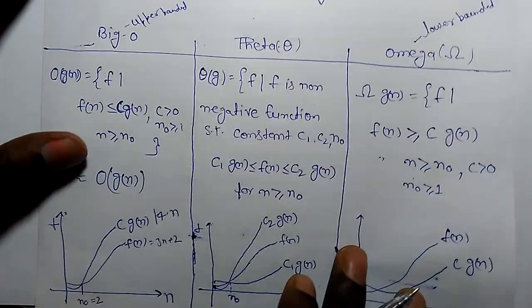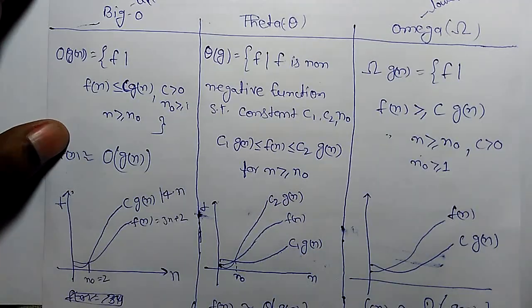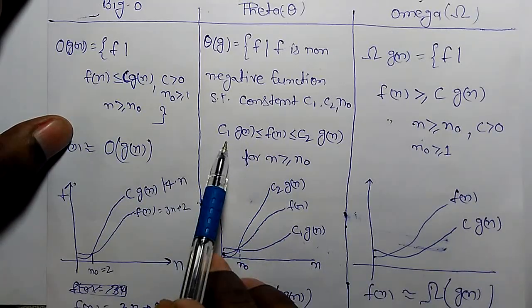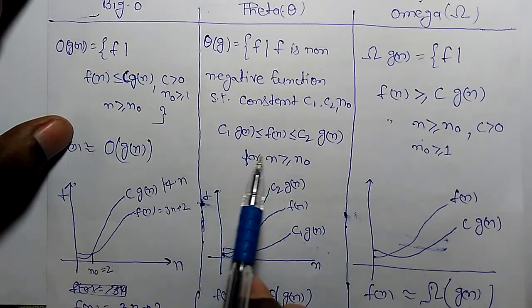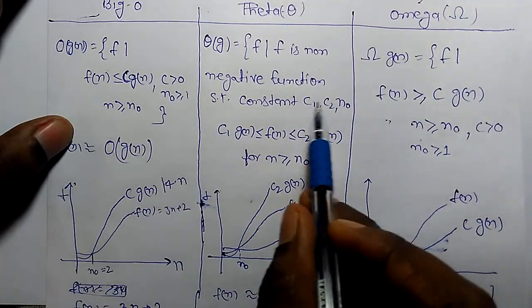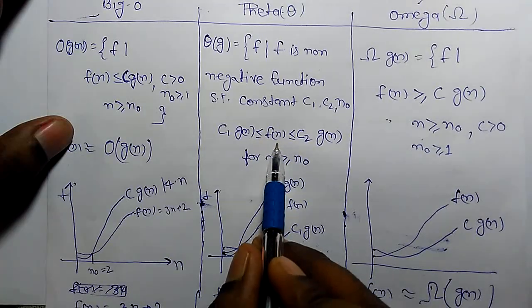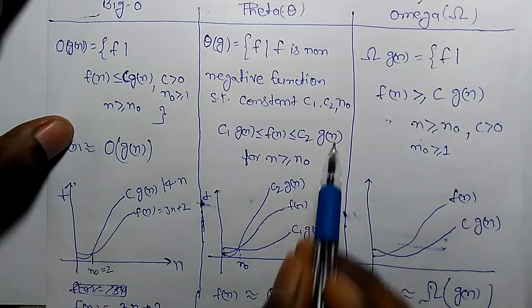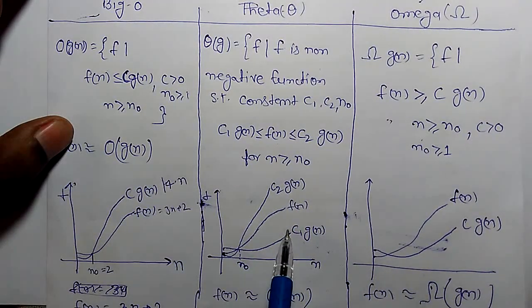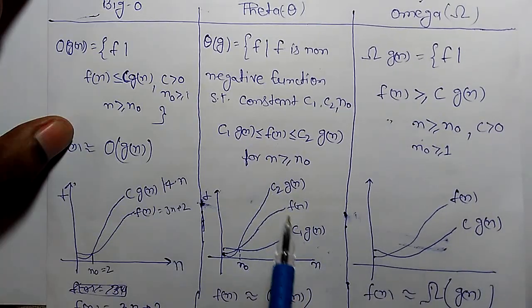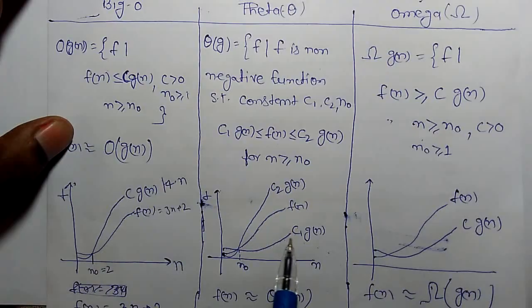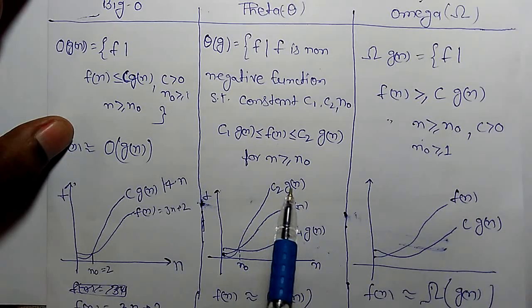Now let's understand Theta. Theta of G of N lies between C1 of G of N and C2 of G of N. You have to find two constant values such that function F of N should be greater than C1 of G of N and less than C2 of G of N. Graphically we can see we have to find a function G of N and two constant values C1 and C2 such that F of N is lower bounded by C1 of G of N and upper bounded by C2 of G of N.